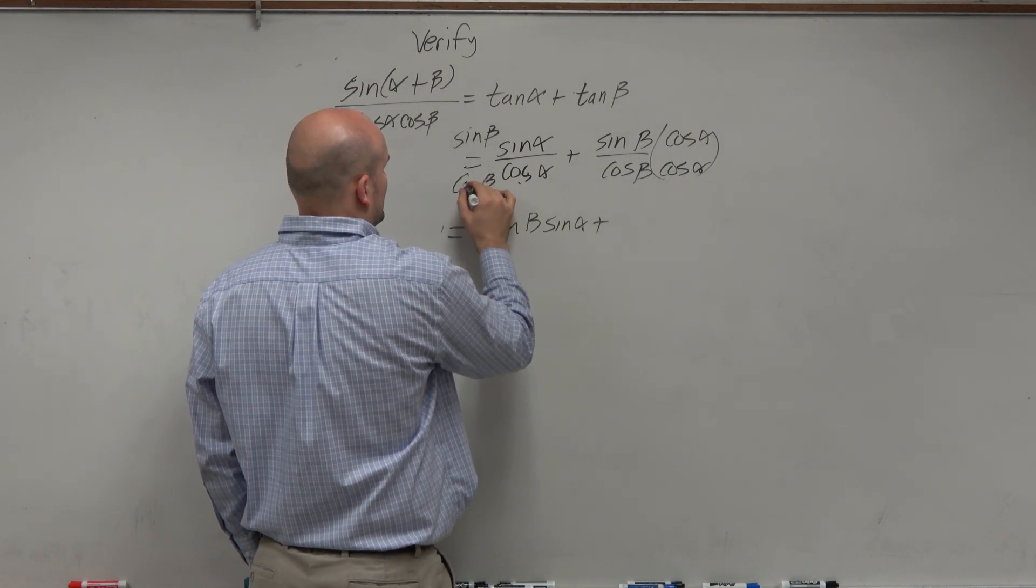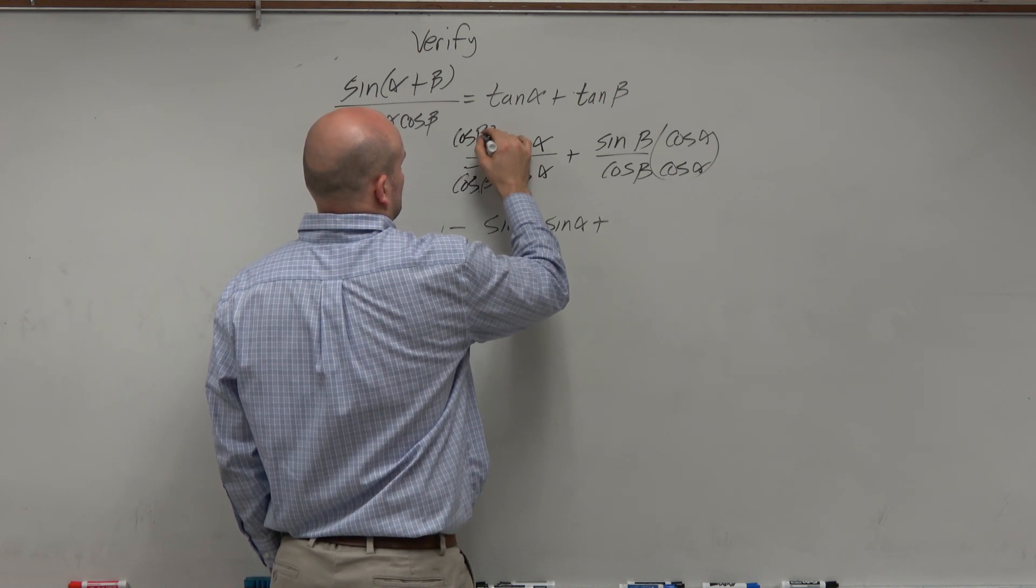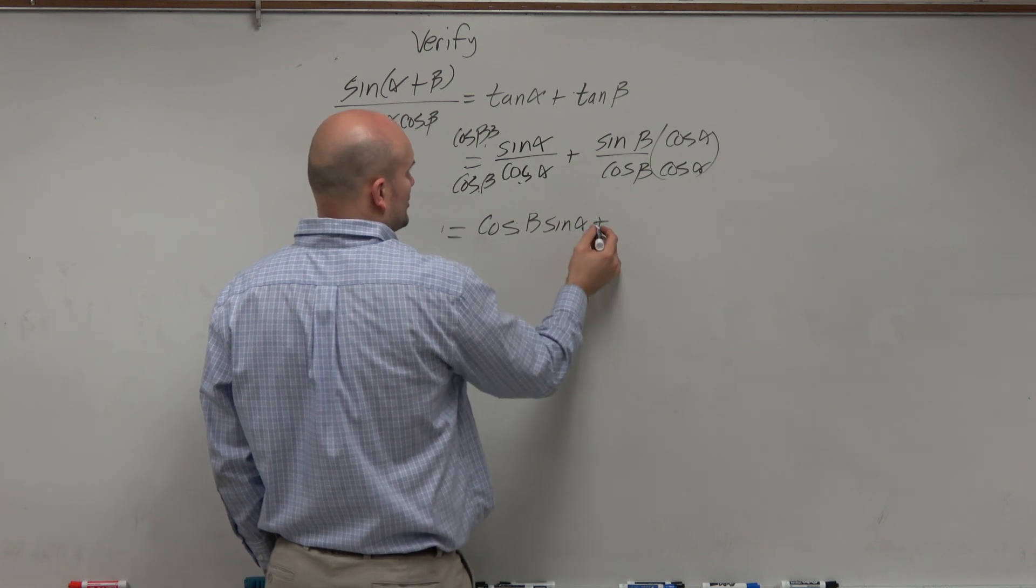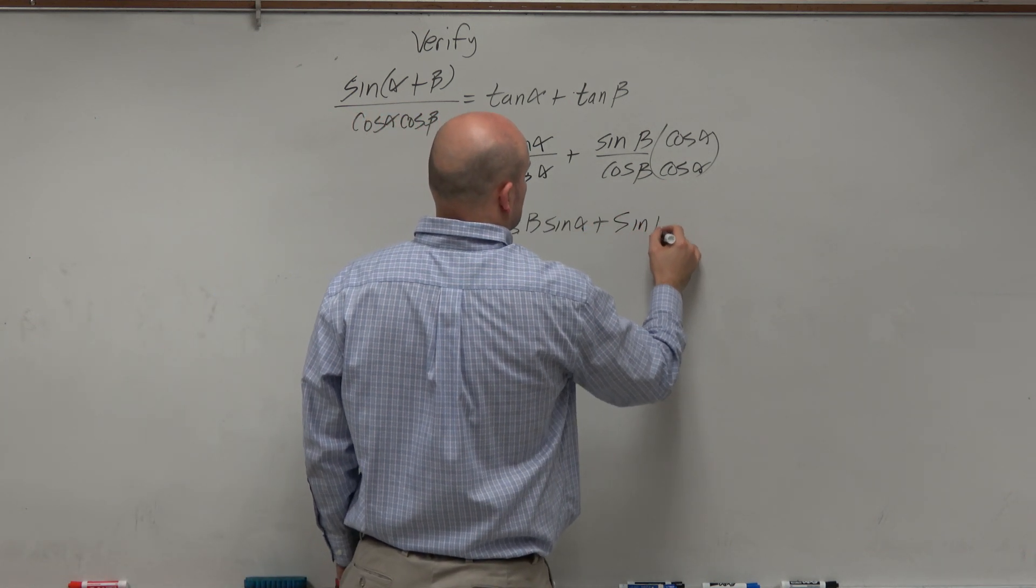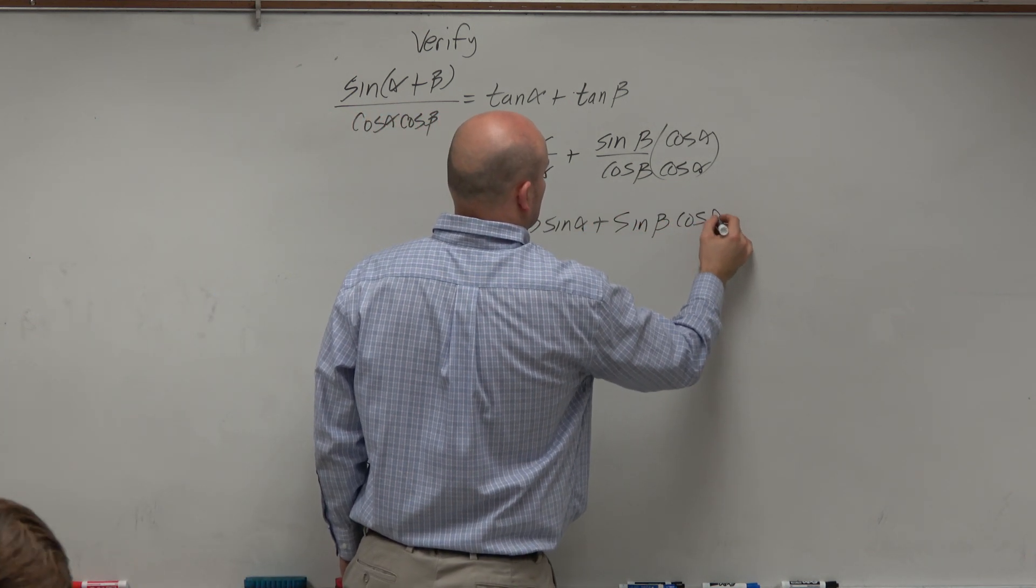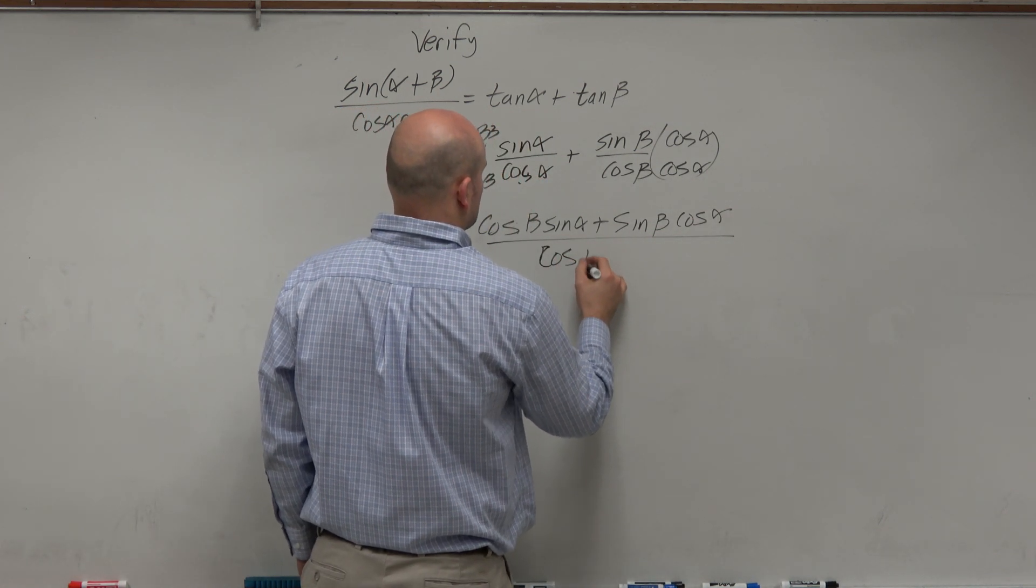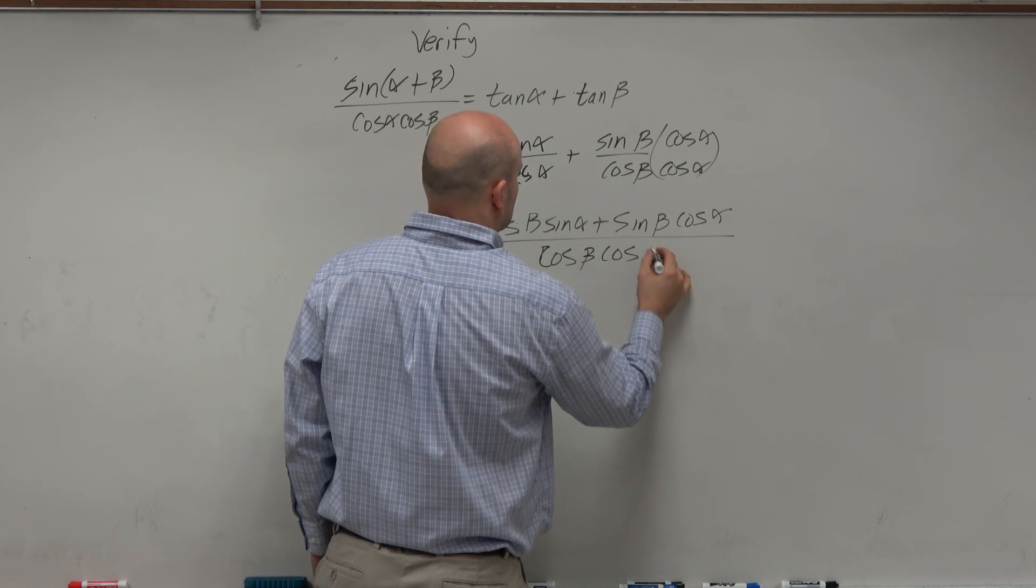This should be a cosine of beta, right? Now, what did I do wrong here before? I'm still not sure. Cosine of alpha plus sine of beta cosine of alpha all over cosine of beta cosine of alpha.